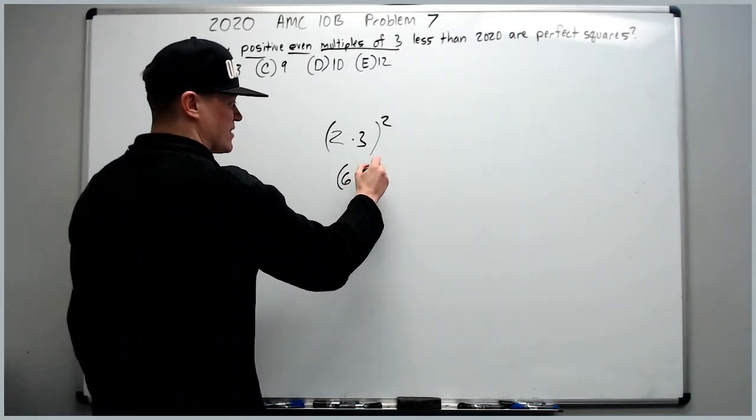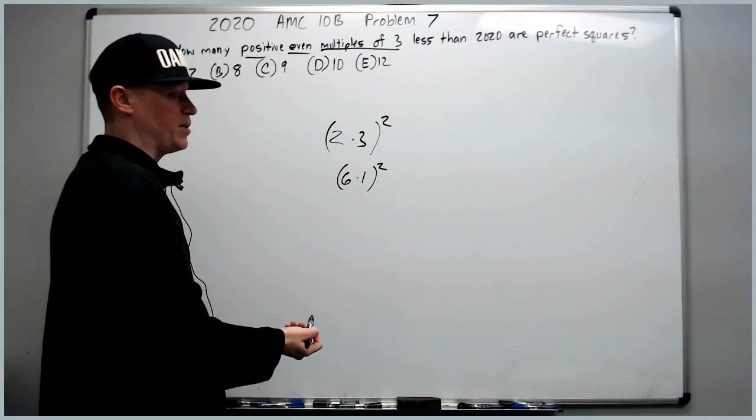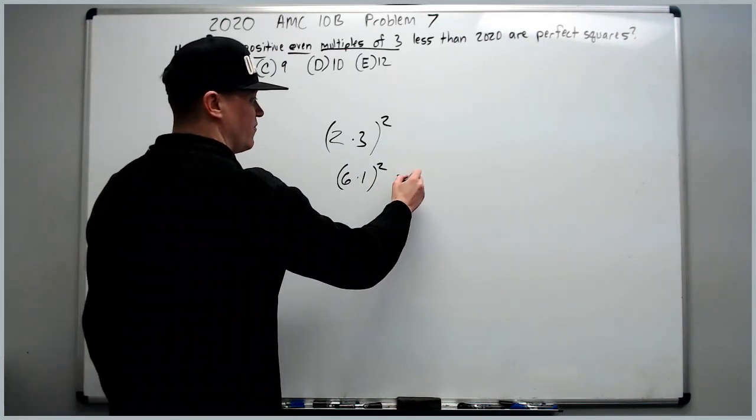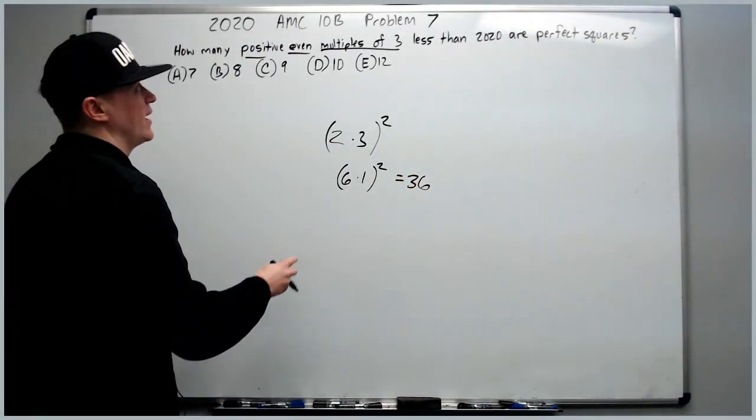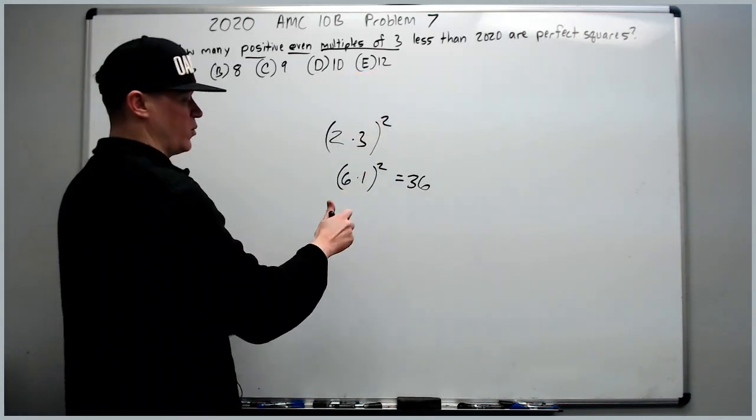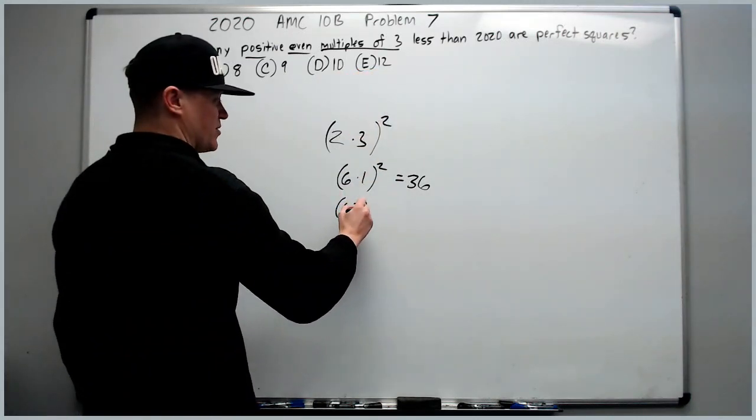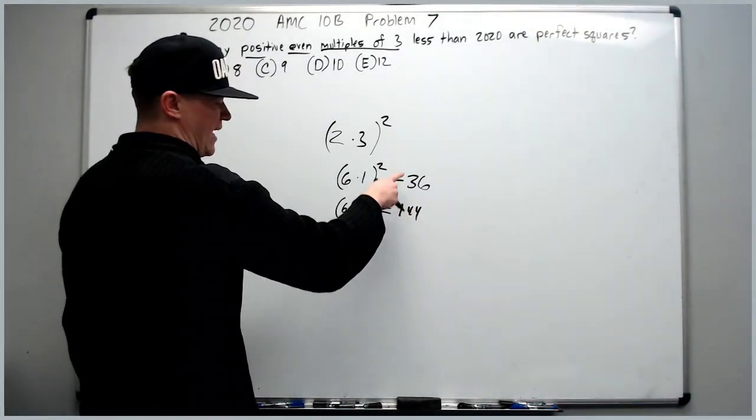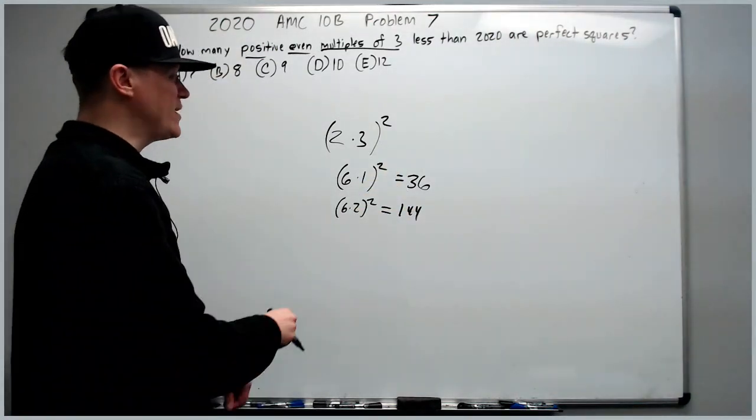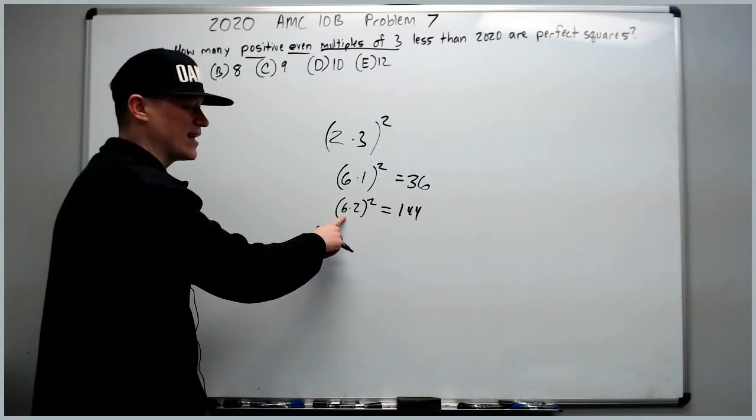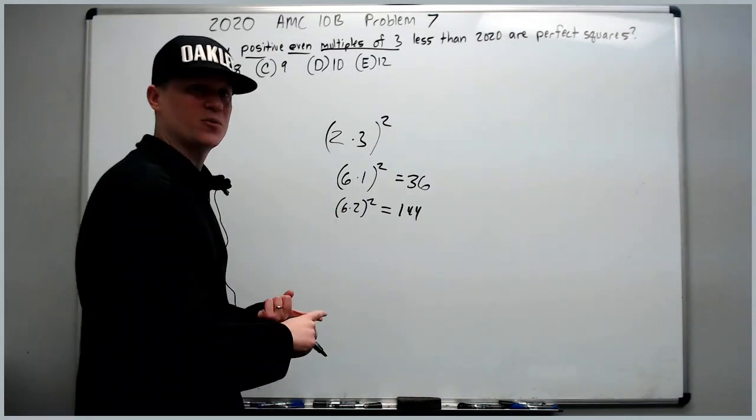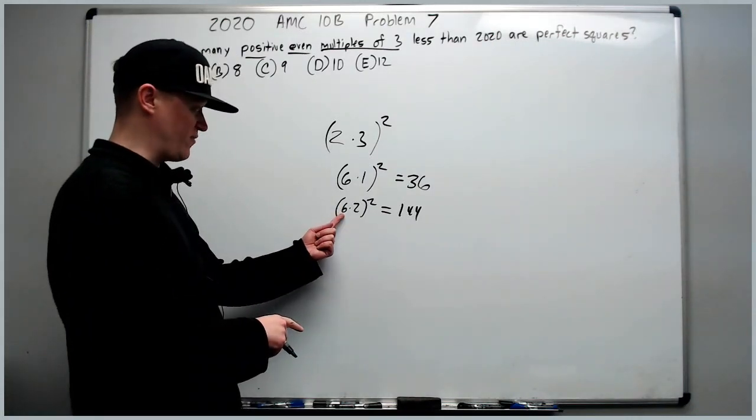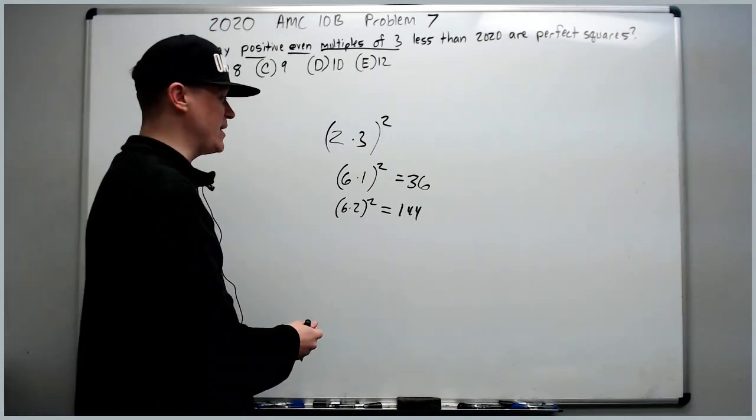Then we can do 6 times 1 squared - that will be a positive even multiple of three, 36. Less than 2020, we're good. We can have 6 times 2 squared. That's 12 squared is 144. We don't actually have to find all of these. We can be confident because of the six that it's going to be a multiple of three and the two, which is a factor of six, it will definitely be even.